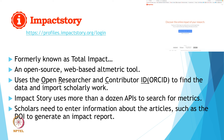ImpactStory is an open-source web-based altmetric tool. It uses the ORCID ID to find data and import scholarly work, and aggregates impact data from many sources — from Mendeley to GitHub to Twitter and many more — displaying it in a single point. Users create collections of materials through online identifiers such as Google Scholar IDs, DOIs, and PubMed IDs. ImpactStory uses more than a dozen APIs to search for metrics, and the account can be synchronized with ORCID to update automatically when new content is published.